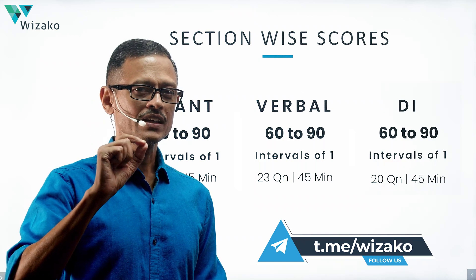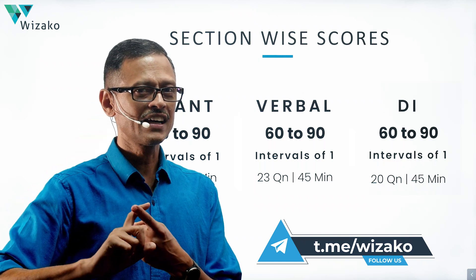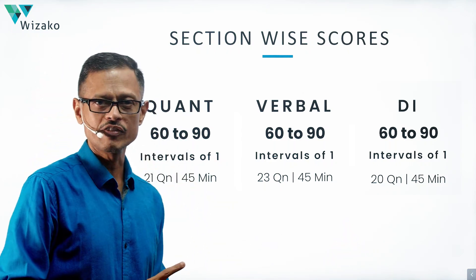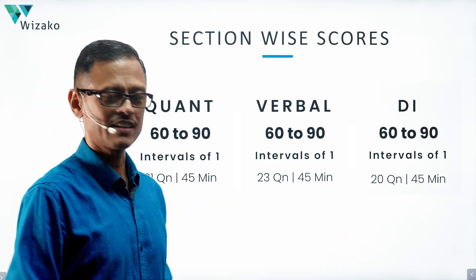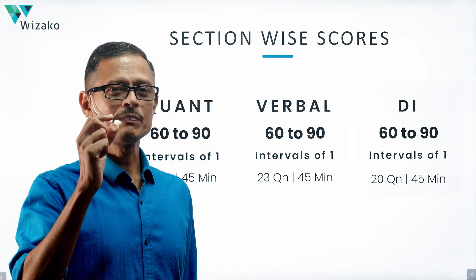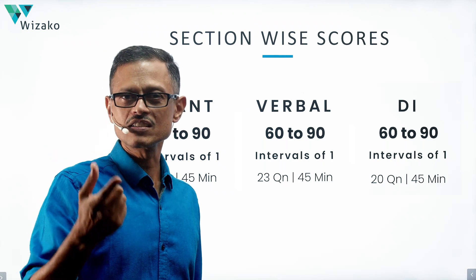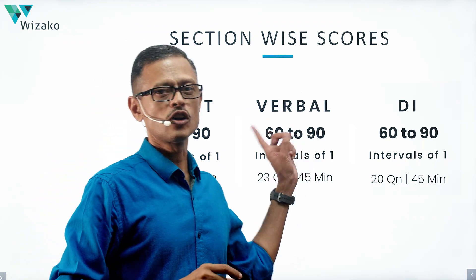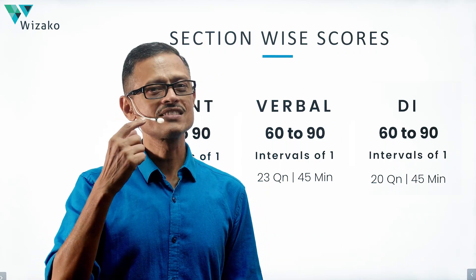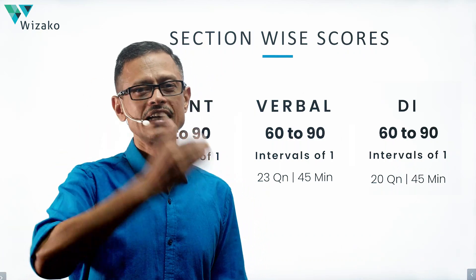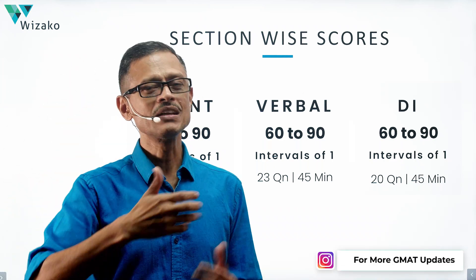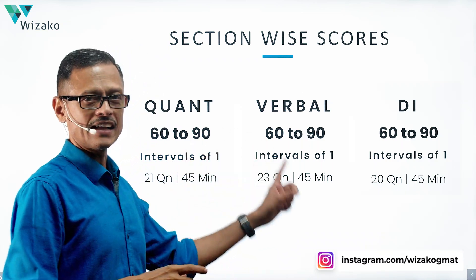Quick recap: for the Quant section, it's 21 questions to be done in 45 minutes — a little over 2 minutes per question. For the Verbal section, 23 questions in 45 minutes — a little under 2 minutes. It appears we've been given more time per question in the verbal section, but keep in mind that sentence correction is not part of the verbal section. Sentence correction is the question type where you gain time, and since it's been removed, they've adjusted the timing accordingly.